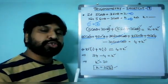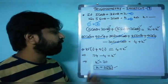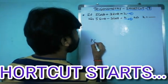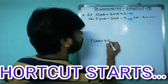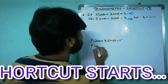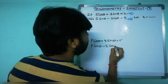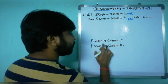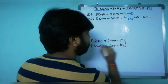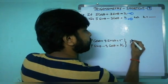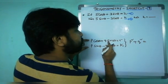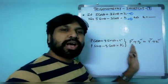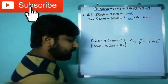This is the method. Using a shortcut formula you can find this very easily within a fraction of seconds. The shortcut formula is: if p cos θ + q sin θ = r and p sin θ − q cos θ = k, then p² + q² = r² + k². That's all — p² + q² = r² + k².